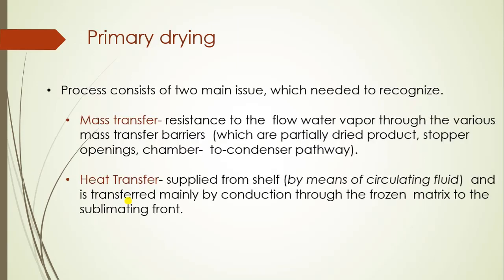As we know, in primary drying sublimation of ice takes place. The primary drying process mainly consists of two main issues: mass transfer and heat transfer. Mass transfer means that as sublimation takes place, it leads to removal of ice in the form of water vapor, and mass is transferred from the container to the condenser. There are barriers that affect this. For heat transfer, we have to supply heat to the container, and heat should be transferred from the shelf to the frozen matrix. We will mainly discuss mass transfer and heat transfer for primary drying.